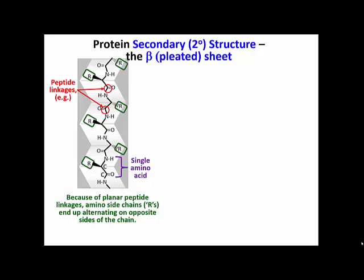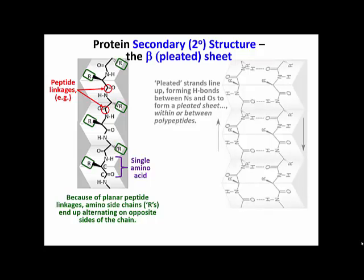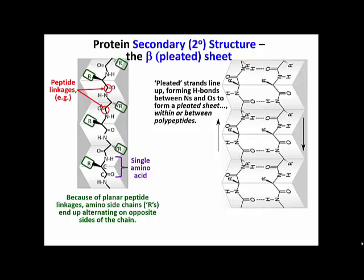Well, when pleated strands like these, two or more of them line up, hydrogen bonds can again form between the N's and the O's in two or more pleated chains to form this pleated sheet. And so I've shown you the H bonds with little dots, showing you where they would form. So now you see the relative position of the oxygens on the carbons as well.